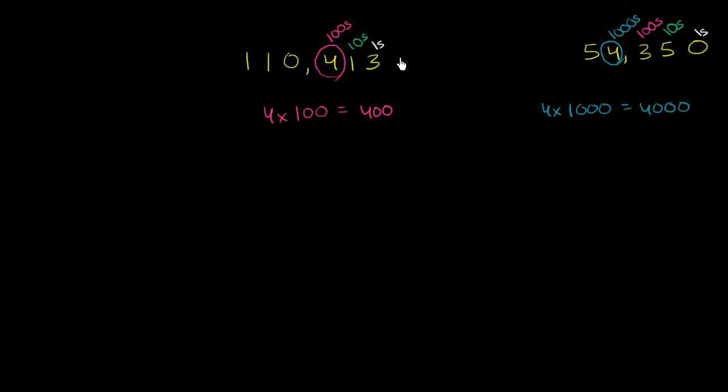And it makes complete sense. This four is one place to the right of this four. This four is in the thousands. The magenta circled four is in the hundreds. So every time we move a place value to the right,